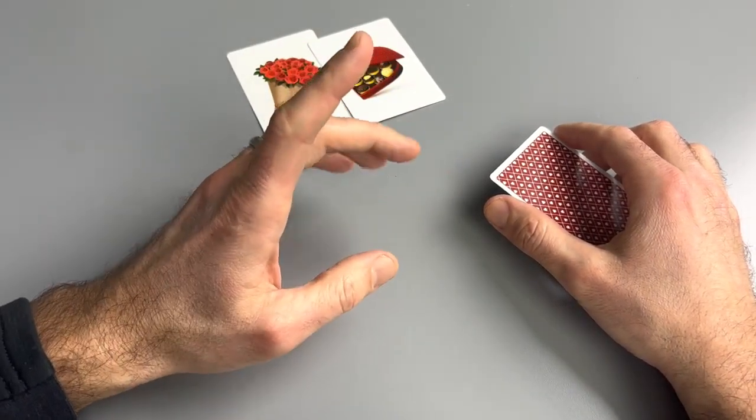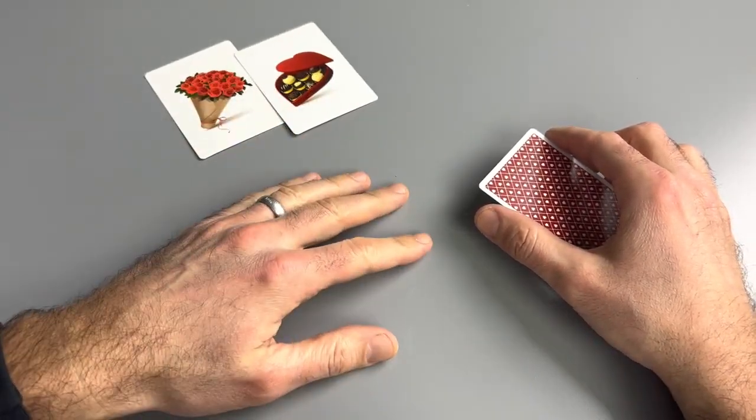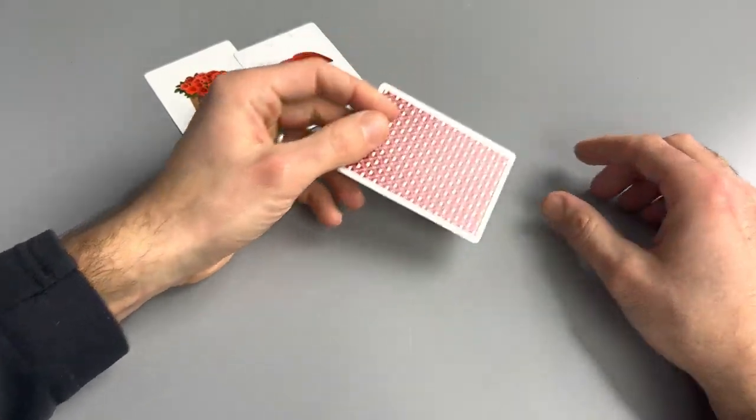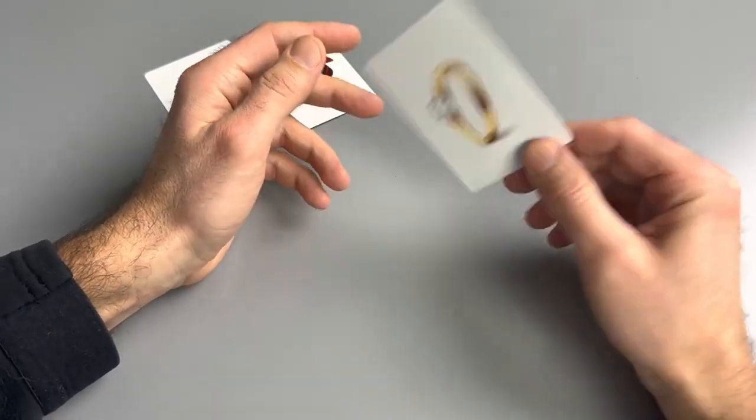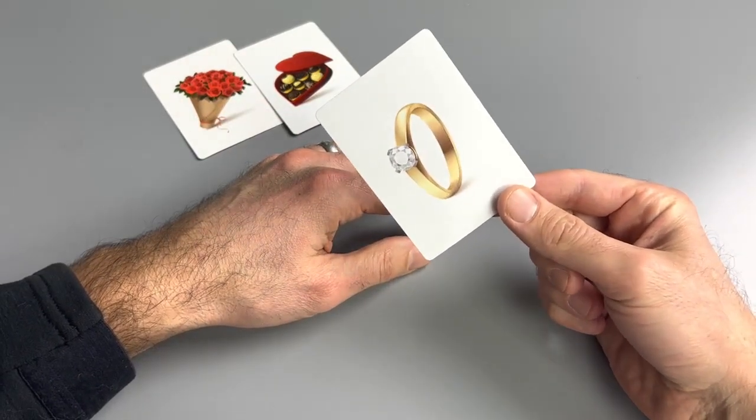And then she said, I'm not done. I get to pick a card. And I said, wait, what about these? And she said, no, no, no, I get to pick. And I picked this one. And you know, this year I ended up having to get her a diamond ring because I guess she cheats better than I do.